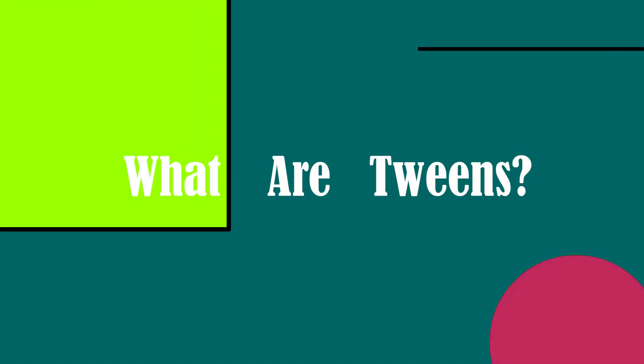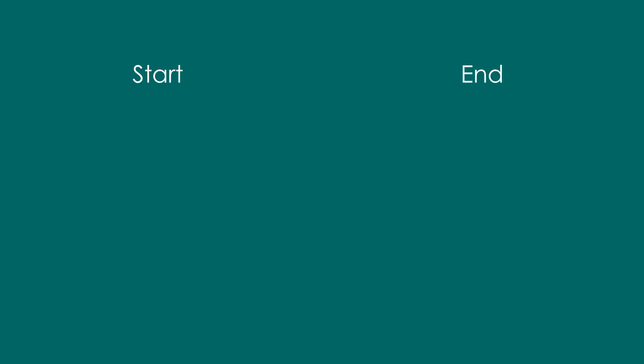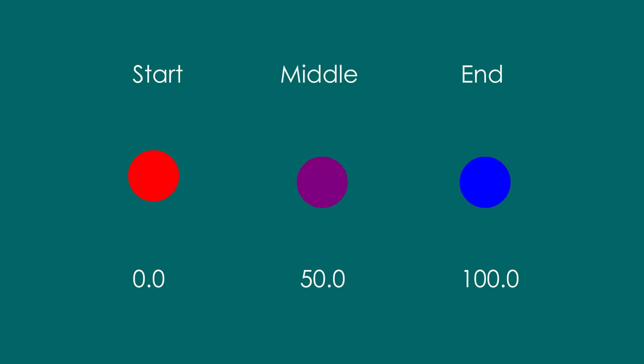What are tweens in Flutter? Every animation in Flutter has a start state and an end state, say from red to blue or from size 0 to 100. But an animation is mainly concerned with values in between the start and end states. This allows us to show smooth progression between them.